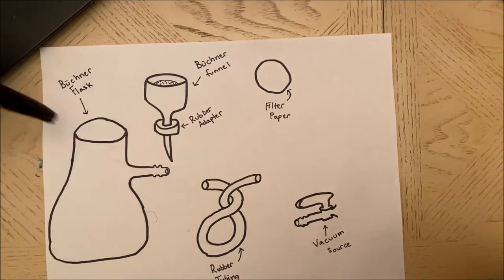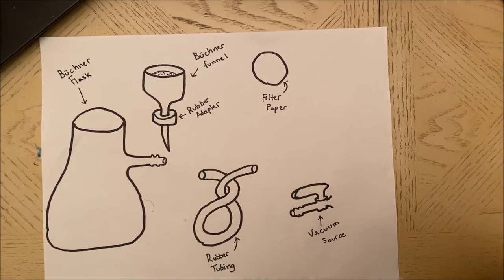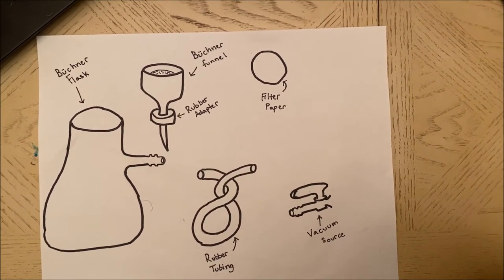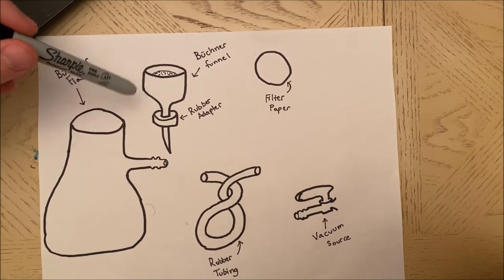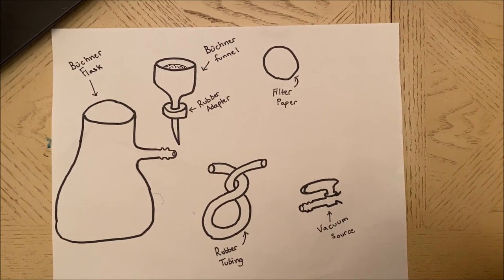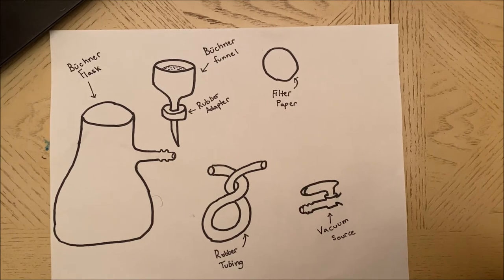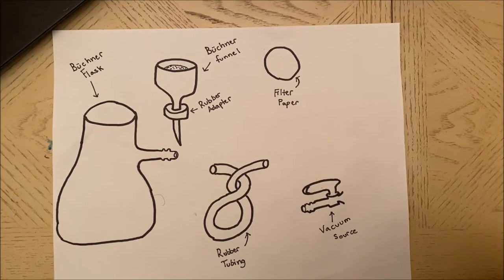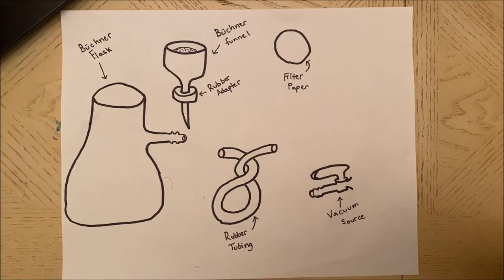A couple things to note: vacuum filtration is faster than gravity filtration because the solution is being forced through the filter paper by an application of reduced pressure. This is in contrast to gravity filtration where only gravity would be acting on it.